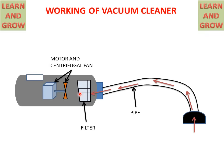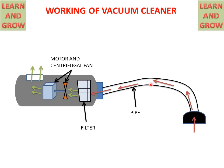The air with dust particles reaches the filter where it is filtered, and clean air passes through the filter and reaches the atmosphere. This pressure difference sucks air from outside to inside the vacuum cleaner. Suction pressure is created in front of the centrifugal fan and negative pressure is created behind the centrifugal fan.